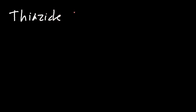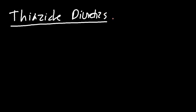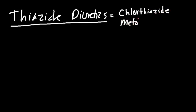We're now going to cover thiazide diuretics, which will also include thiazide-like diuretics. The prototypical drugs we're going to be talking about are chlorothiazide and metolazone — these are your two prototypical thiazide or thiazide-like diuretics.